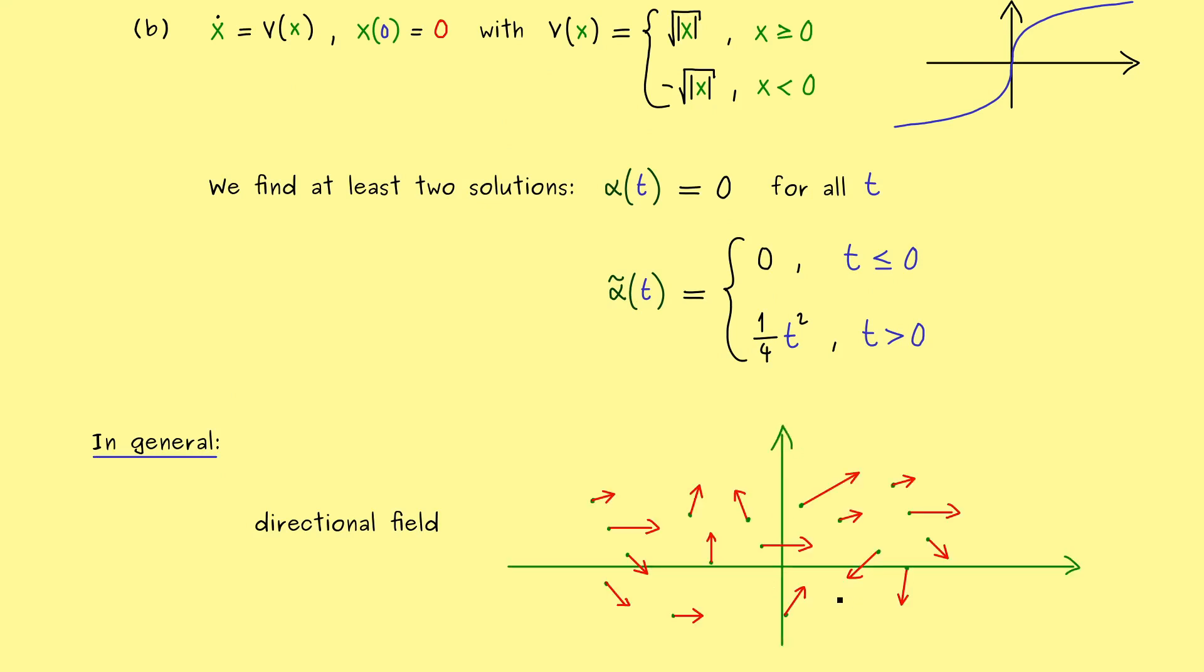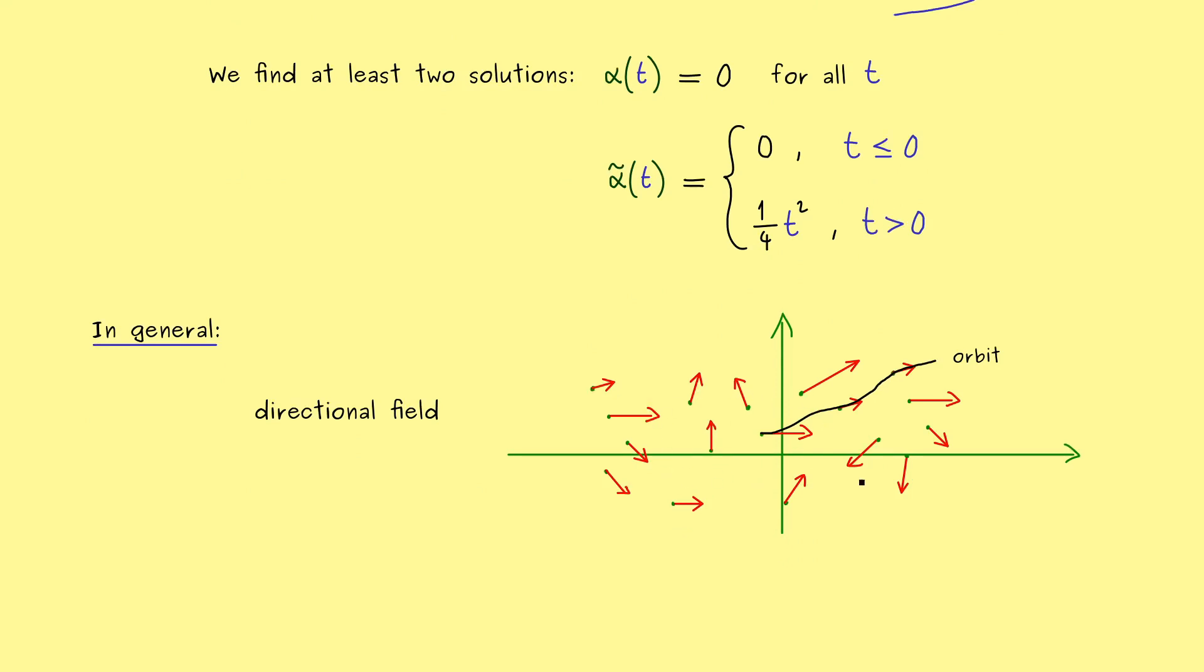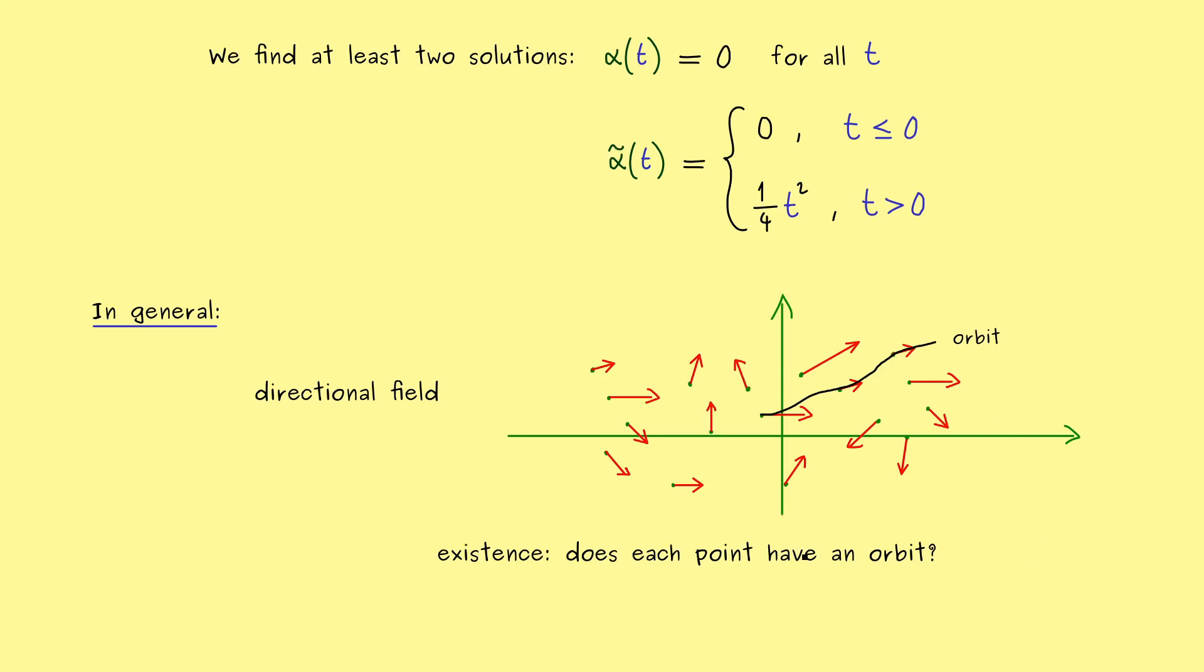So this means we visualize the function v as a vector field in the domain given by the variable x. And now the existence of solutions means that for a given point, we can follow the arrows to get an orbit. Indeed, such an orbit is just the image of the solution. Hence, if we want to have existence of solutions, we want that each point lies on an orbit. Or to say it differently, we could formulate the question as: does each point have an orbit? Of course, this is what we want, because then each initial value problem with the given vector field is solvable. At least in theory, then we know that the solution exists.